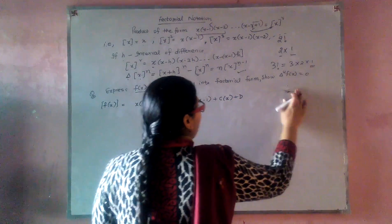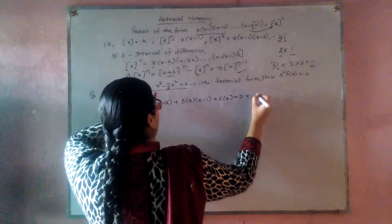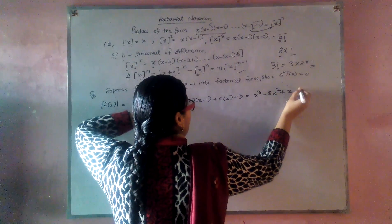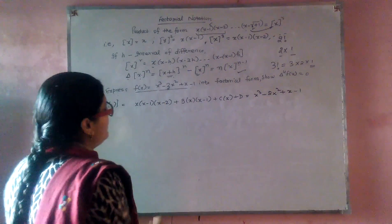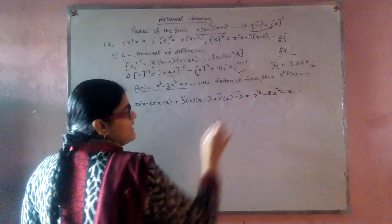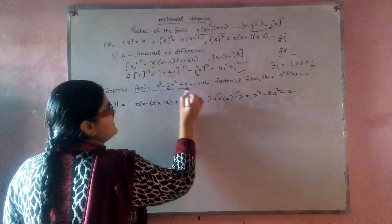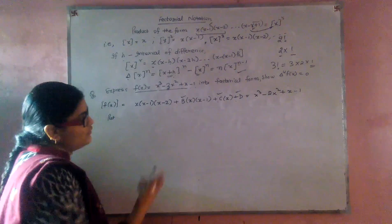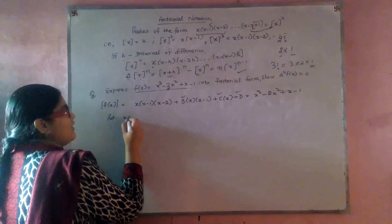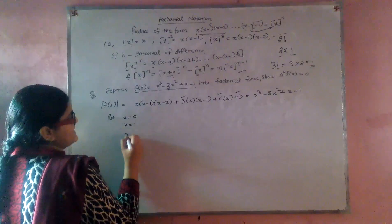Now compare this general form with our given equation. We have to find out the values of b, c, d. For finding out these values, put x as 0, x as 1, x as 2 respectively.